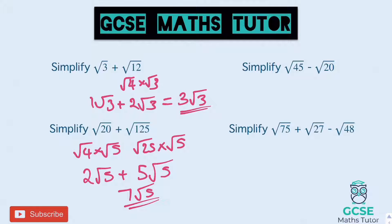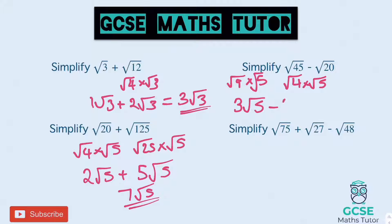Now a subtraction: root 45 is root 9 times root 5, which is 3 root 5. We subtract root 20, which is root 4 times root 5, giving 2 root 5. So 3 root 5 take away 2 root 5 leaves 1 root 5 - we don't write the 1, so the answer is just root 5.